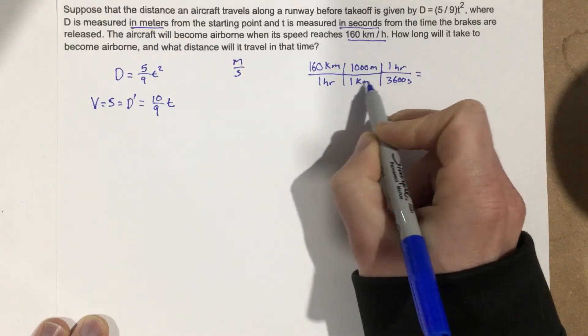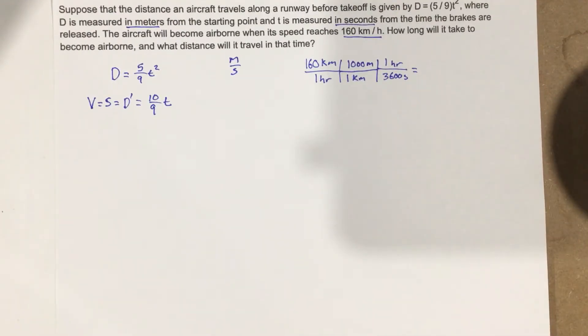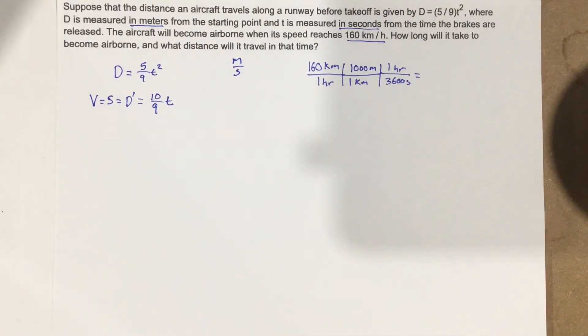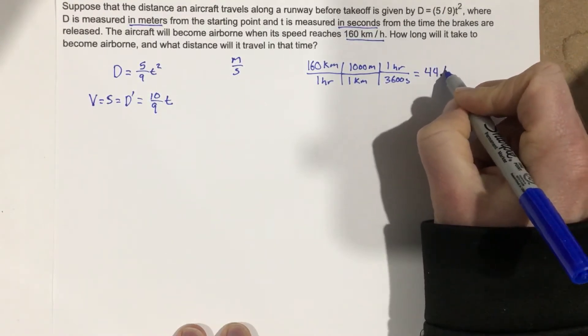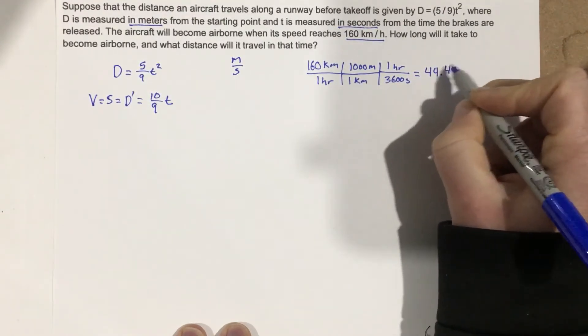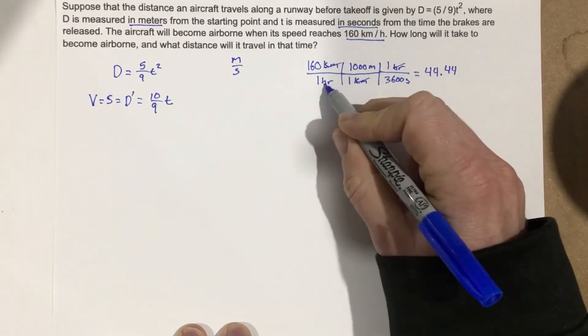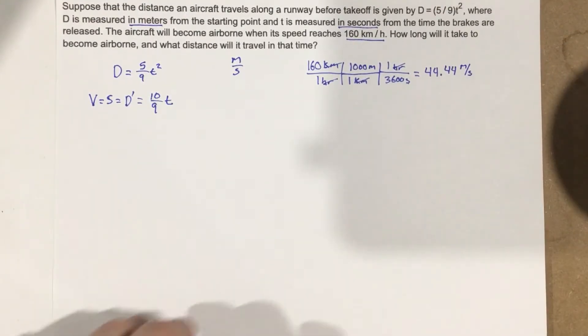So if I multiply along the top then divide these out, I'm going to end up with 160 times 1,000 divided by 3,600. So that's going to give me 44.44 and we'll call it, this is now kilometers cancel, hours cancel, meters per second. That's how fast we're going. That's how fast we need to be going to get airborne.